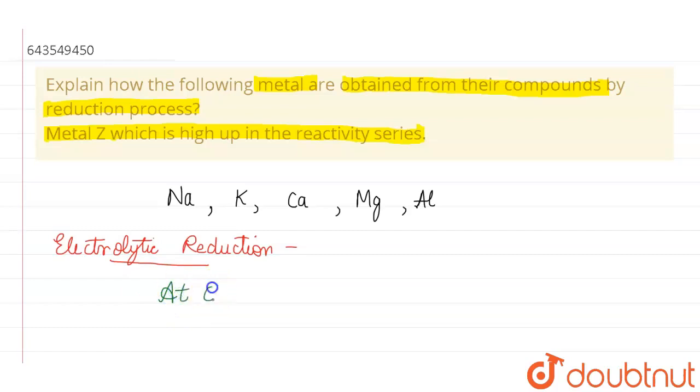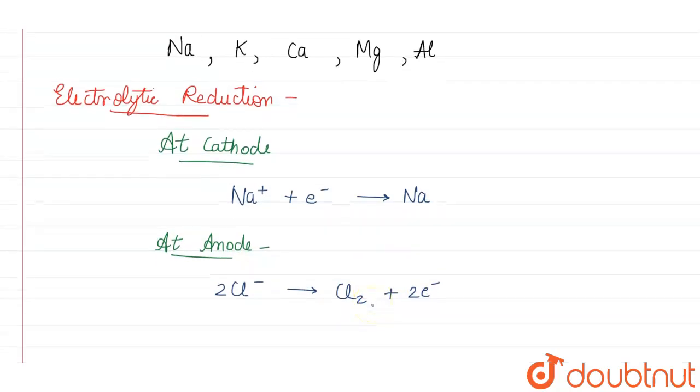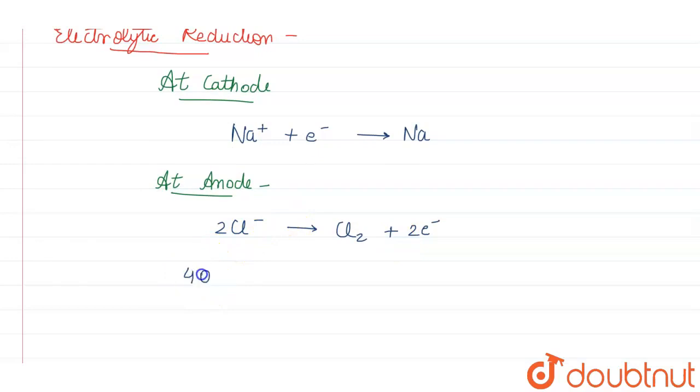At cathode, Na plus gains an electron and forms Na. At anode, 2 Cl minus ions give us chlorine gas and 2 electrons. The second reaction which occurs at the anode is 4 times hydroxide ions give us oxygen gas, 2 times water and 4 electrons.